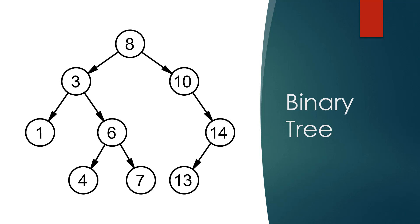So a node can have 0, 1, or more nodes connected to it. A binary tree, as per its name, restricts it to two child nodes per node.